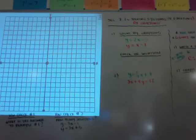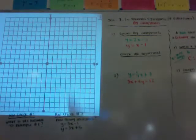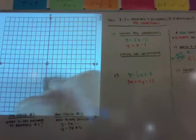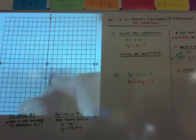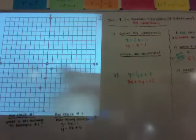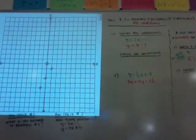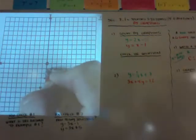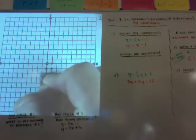When we solve by graphing, we just draw our lines. The green one is y = 2x − 3. I start at negative 3, and I go up 2 and over 1, and down 2 and over 1. This is why you need to be good at graphing. For the red one, y = x − 1. I start at negative 1, go up 1 over 1, and down 1 over 1.